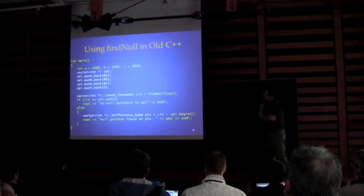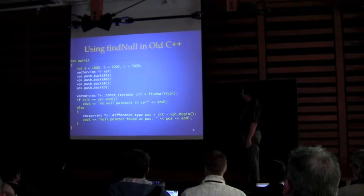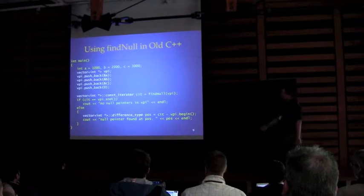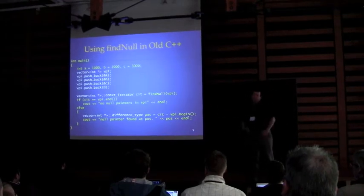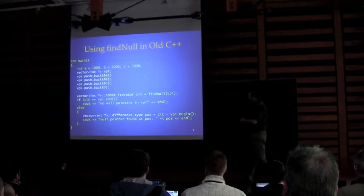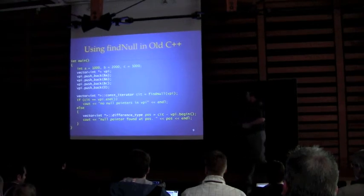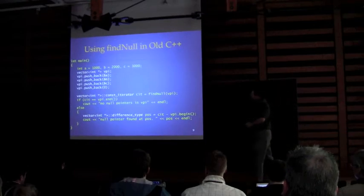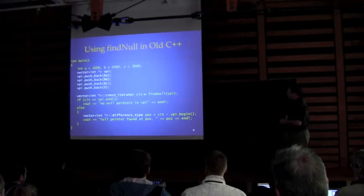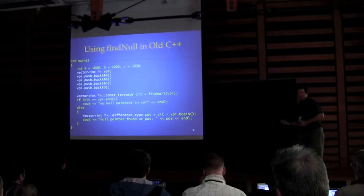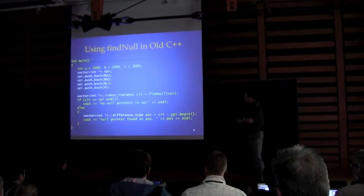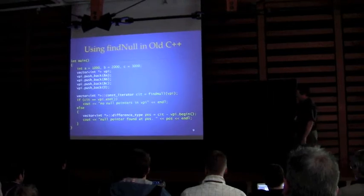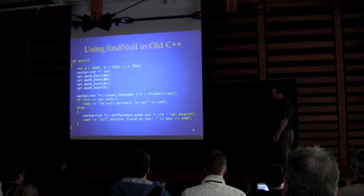Here's example code that uses that findNull function template. It starts by creating a vector of int pointers and stuffing it — in old C++ you do it one by one with pushbacks, or create an array of pointers and initialize the vector from that. Then we need a variable to hold the result of findNull, requiring another wordy declaration. Once we get the result, we might want to know the offset of that null pointer, and the formal type from subtracting two iterators is the vector's difference type — kind of unintuitive.